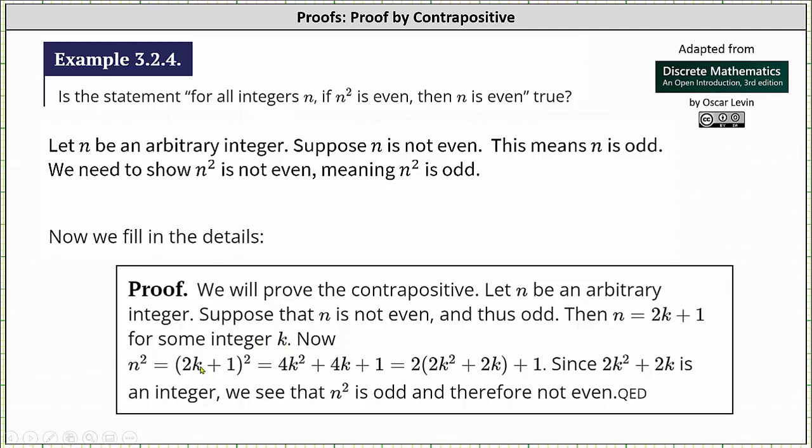Now n² = (2k + 1)² = 4k² + 4k + 1. We can factor 2 from 4k² + 4k and write n² in the form 2(2k² + 2k) + 1.